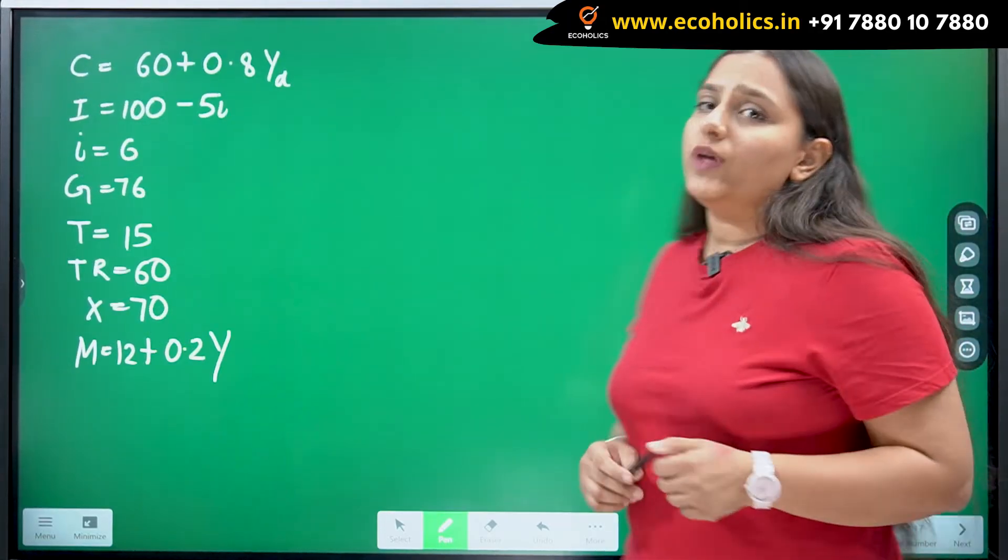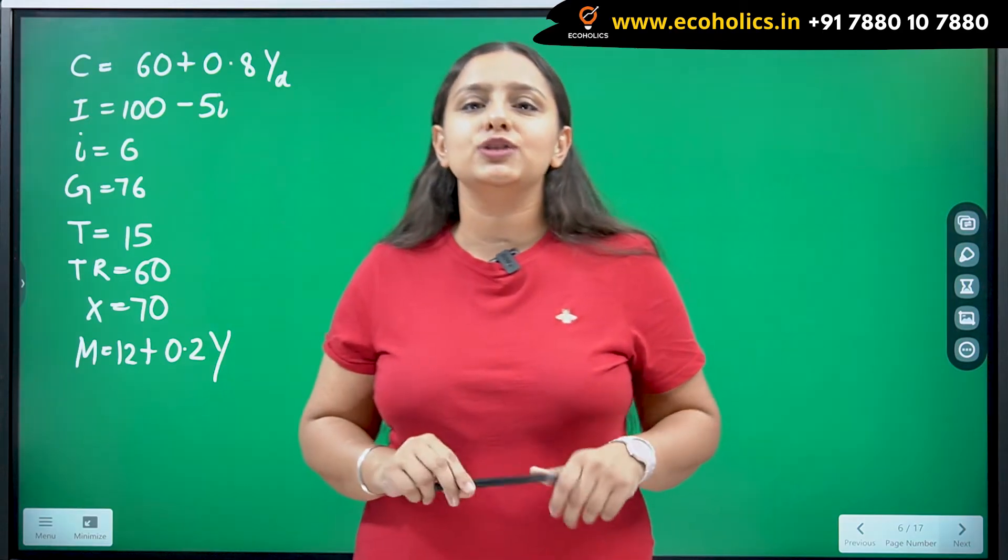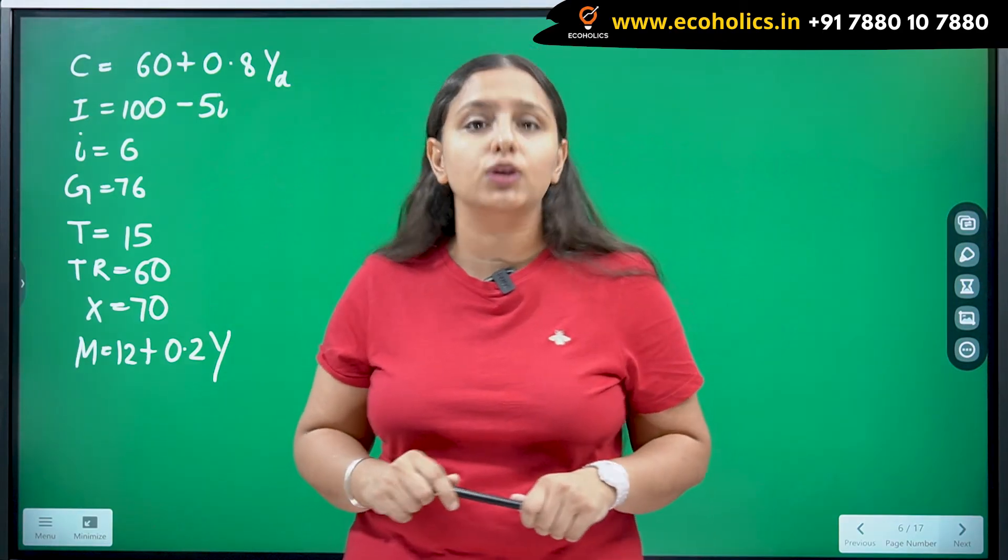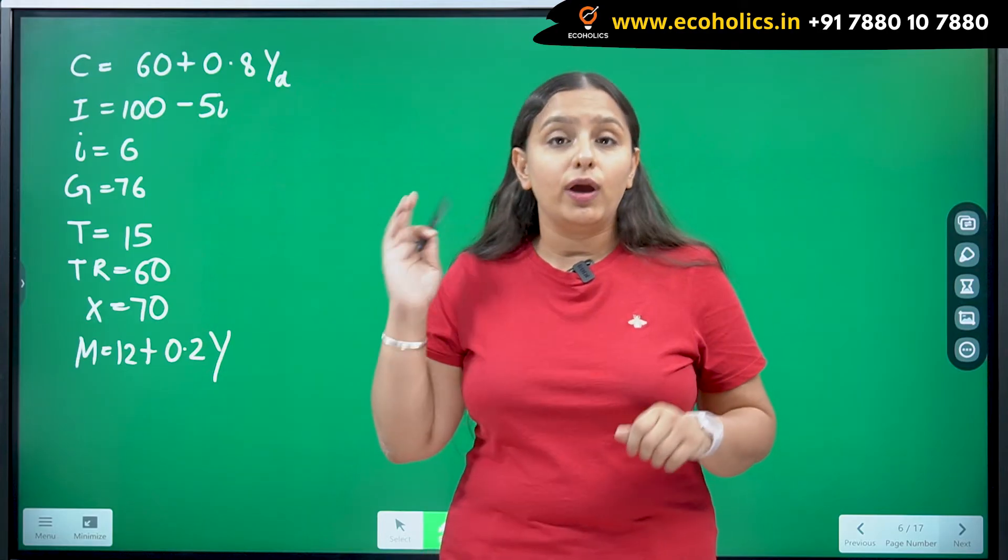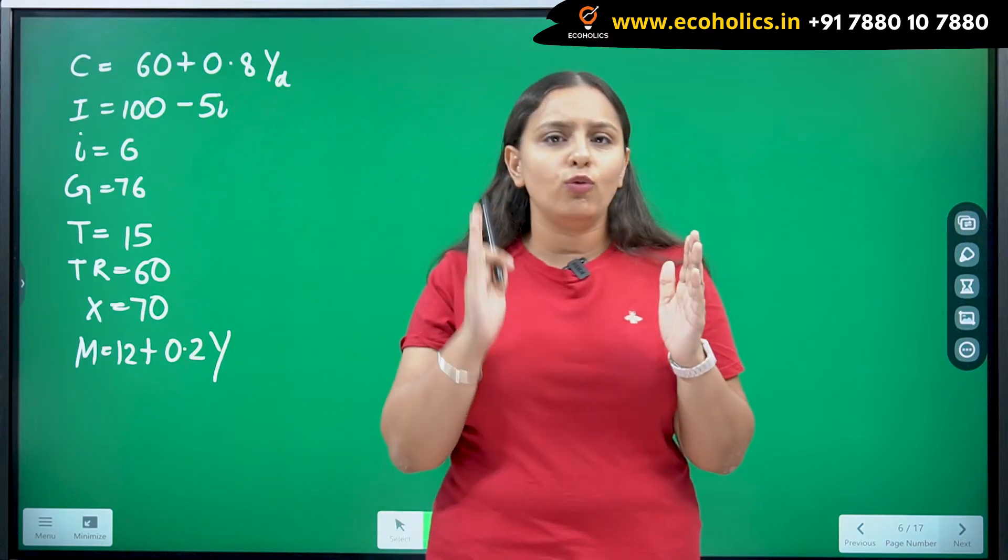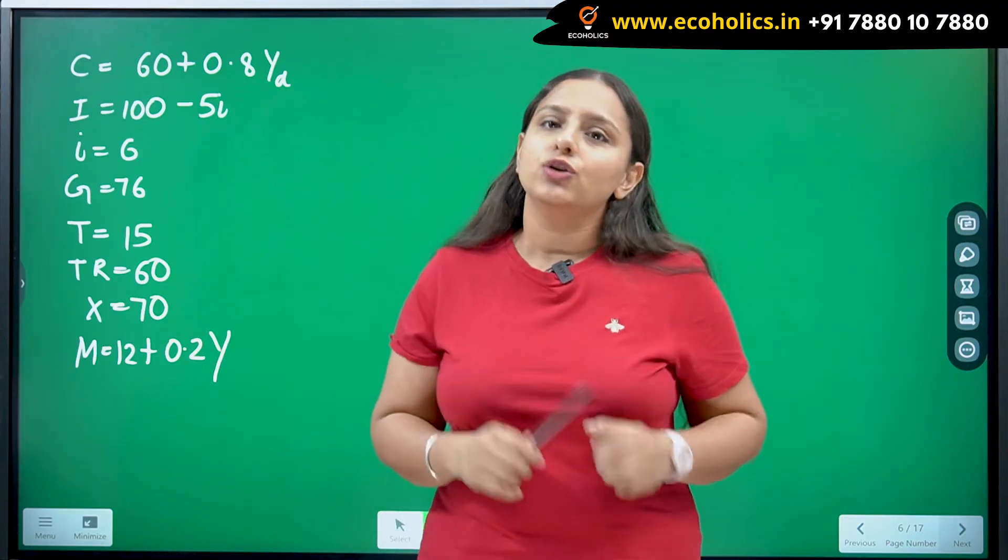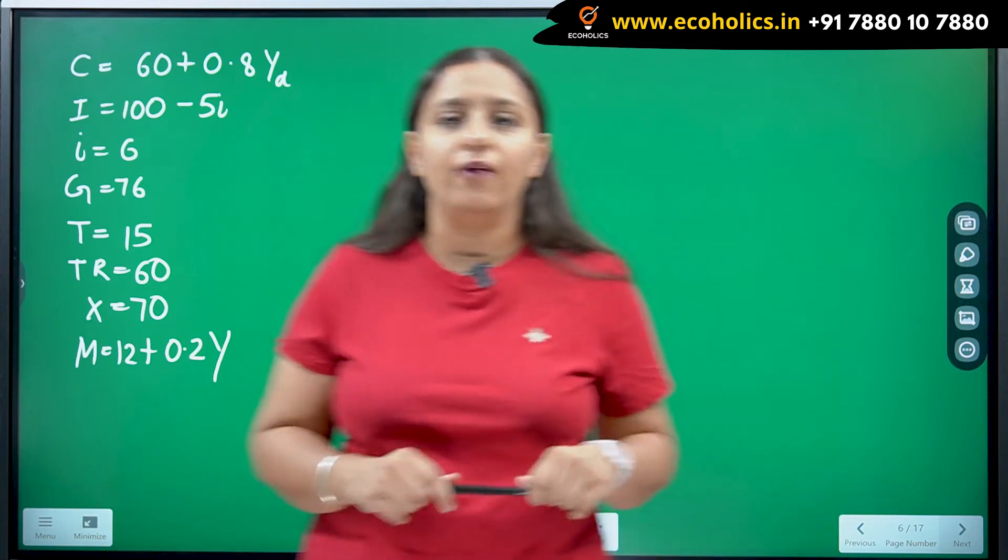Whenever you have to solve for the IS equation, the best and simplest trick is to solve for the equilibrium in the goods market. Under Keynesian model, it is given by where Y equates to aggregate demand. Whenever you will equate your Y equals to AD, you are going to get the equation for IS. This is the simplest trick we have.